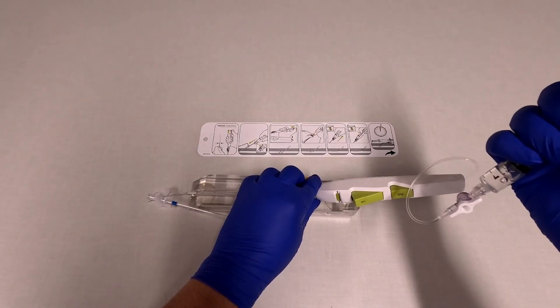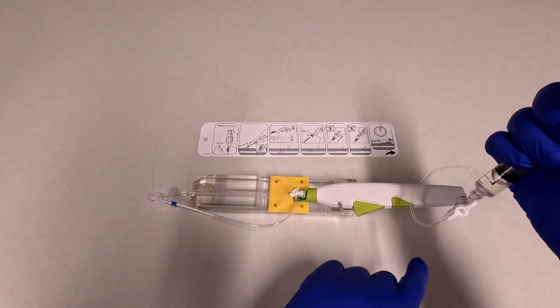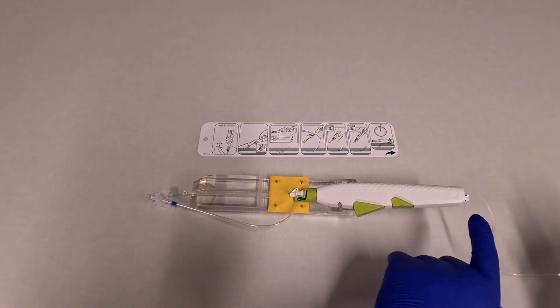Next you're going to push on the syringe to deploy the balloon. You push until you see white, black, white on the indicator at the back end of the device.